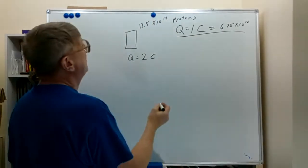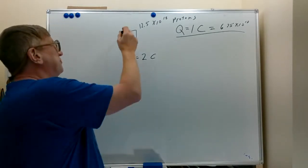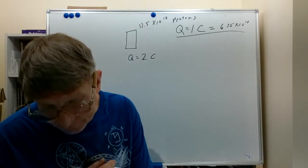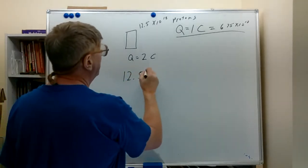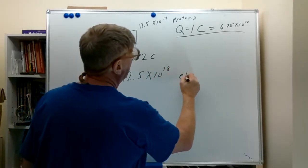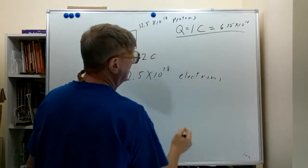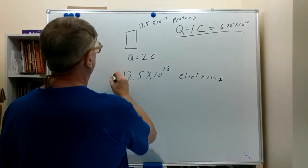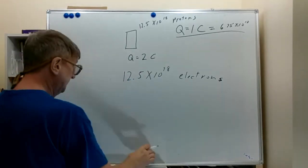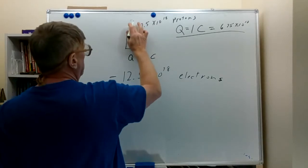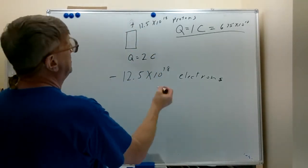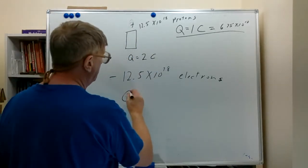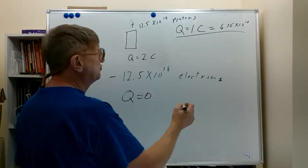If we take a body with a charge of plus 2 Coulombs and then add back 12.5 times 10 to the 18th electrons, we've basically added back the electrons that were taken away to create the positive charge. The negative charge from electrons and the positive charge from the protons — equal in number — will cancel each other. So when we put those electrons back in, we are now at zero charge: Q equals zero, which indicates it is neutrally charged.